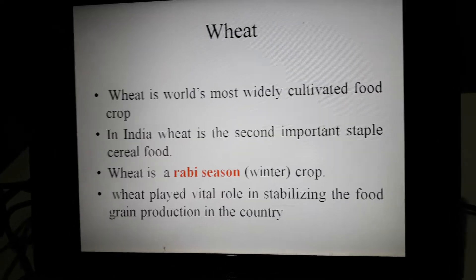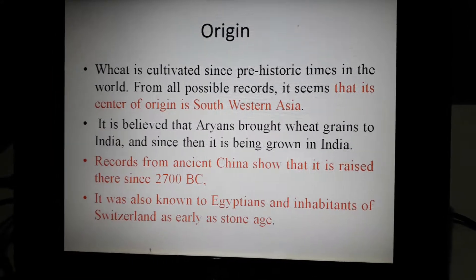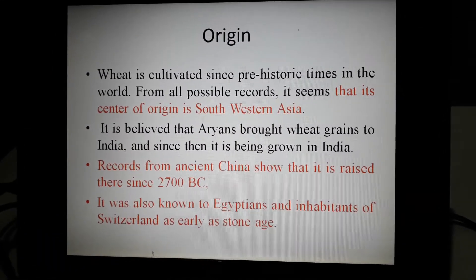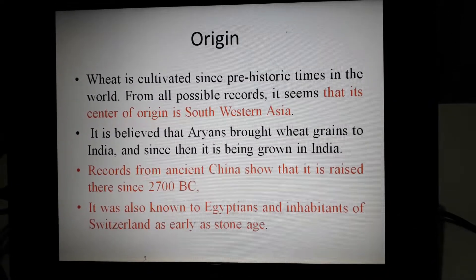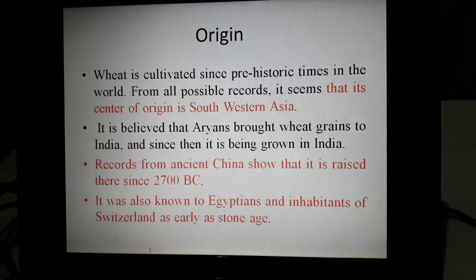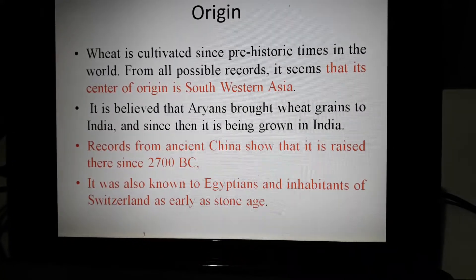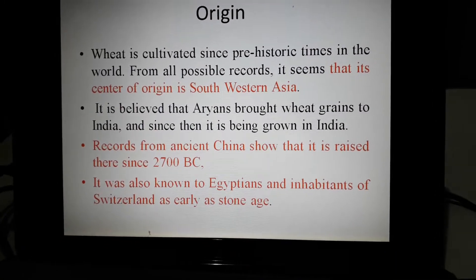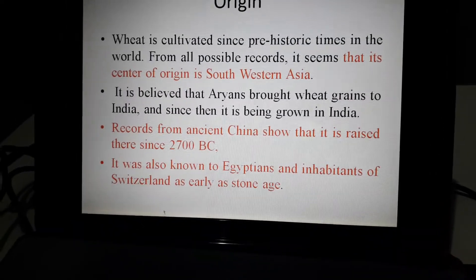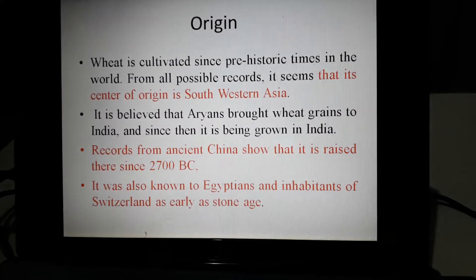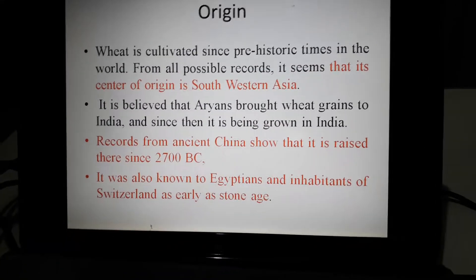Wheat is a cereal crop belonging to the Rabi season. When dealing with the origin of wheat, it originates from southwestern Asia. Additional evidence also points to China, parts of Egypt, and Switzerland as regions of origin. Overall, the origin of wheat is in southwestern Asia, with some parts of China, Egypt, and Switzerland.